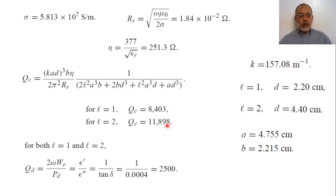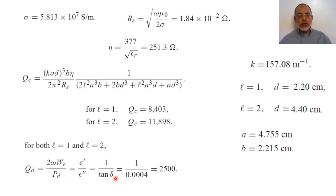The quality factor due to dielectric loss is 1 over tan-delta. The dielectric quality factor is independent of the size or shape of the resonator, so it is a constant factor depending only on the loss tangent of the material filling the cavity. The quality factor due to dielectric loss is 1 over 0.0004, which equals 2,500.